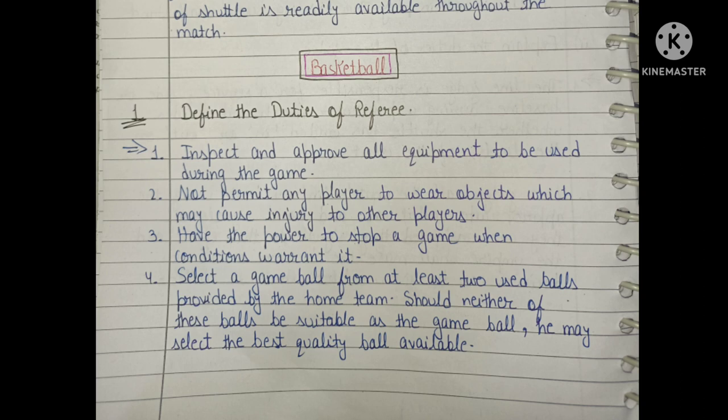Now, the basketball section. Question one: define the duties of the referee. Inspect and approve all equipment to be used during the game. Not permit any player to wear objects which may cause injury to other players. Have the power to stop a game when conditions warrant. Select a game ball from at least two balls provided by the home team; should neither be suitable, he may select the best quality ball available.